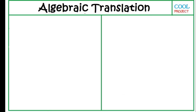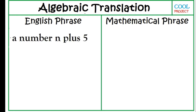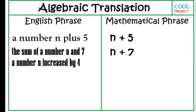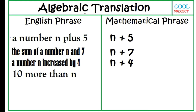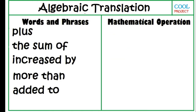Translate English phrase to mathematical phrase and vice versa. A number N plus 5. The sum of a number N and 7. A number N increased by 4. 10 more than N. 3 added to N. The words and phrases — plus, the sum of, increased by, more than, added to — use one mathematical operation, which is addition.